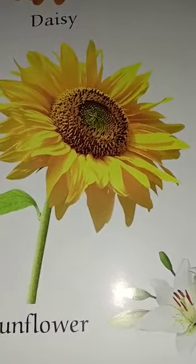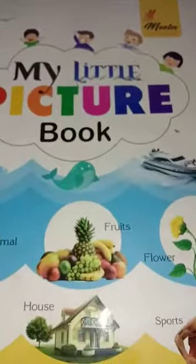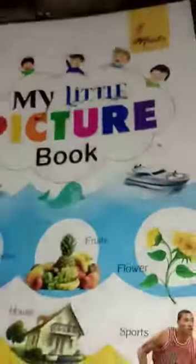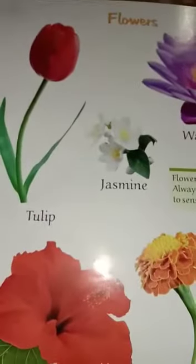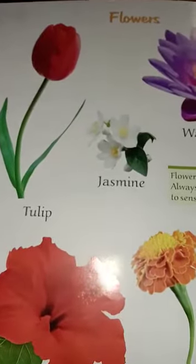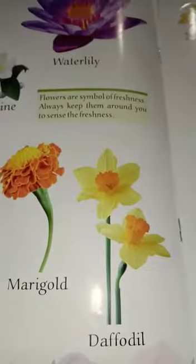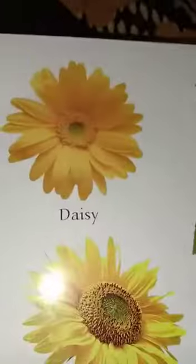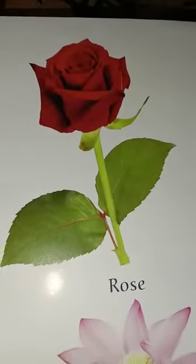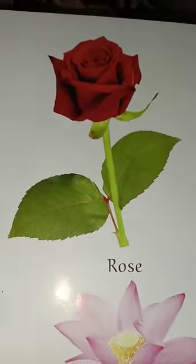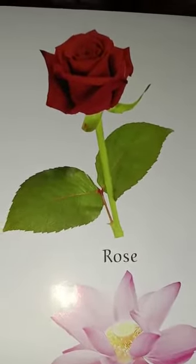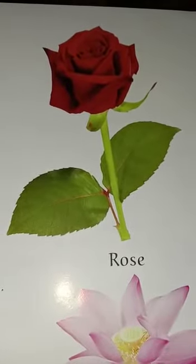So one of you take out this book — this is a GK book — and open page number 20. Our first flower is tulip, second is jasmine, third is water lily, fourth is hibiscus, fifth is marigold, and sixth is daffodil.